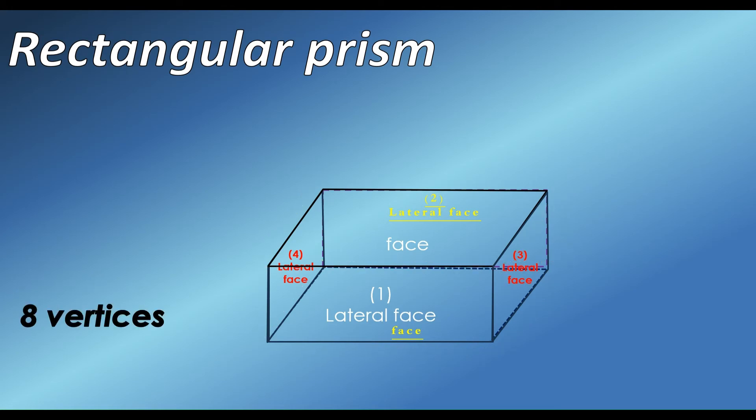Rectangular prism has 8 vertices. Let's count: 1, 2, 3, 4, 5, 6, 7, 8.